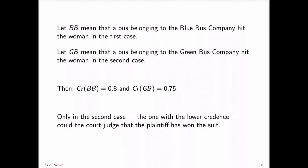I want you to think: if you were a juror in those two cases, would you convict the blue bus company in the first case and the green bus company in the second? In the first case, your 80% credence is based purely on prior statistical information — the blue bus company owns 80% of the blue buses in the region. In the second case, your 75% credence comes from an eyewitness who directly identified the particular bus as one operated by the green bus company.